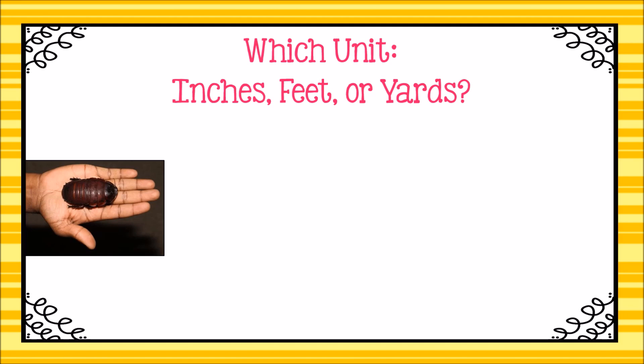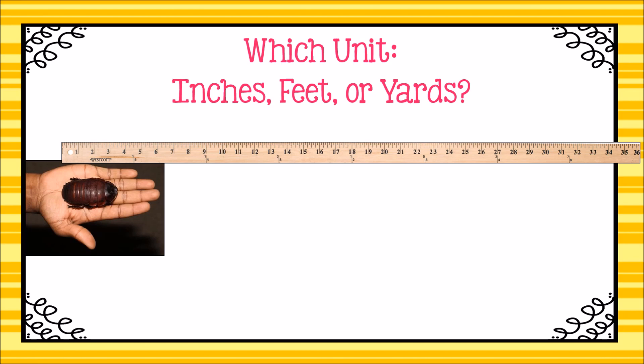Let's measure another object — one of the world's largest cockroaches. What unit would we use: inches, feet, or yards? Pause the video and select a unit. This is a pretty big cockroach. It's not even one yard long. It's not even a foot long either. Because this is a smallish object, we can't get a precise measurement using yards or feet. Switching to inches: it looks like it's more than three inches but less than four inches long. Measuring to the nearest half inch, the length of this cockroach is three and a half inches.